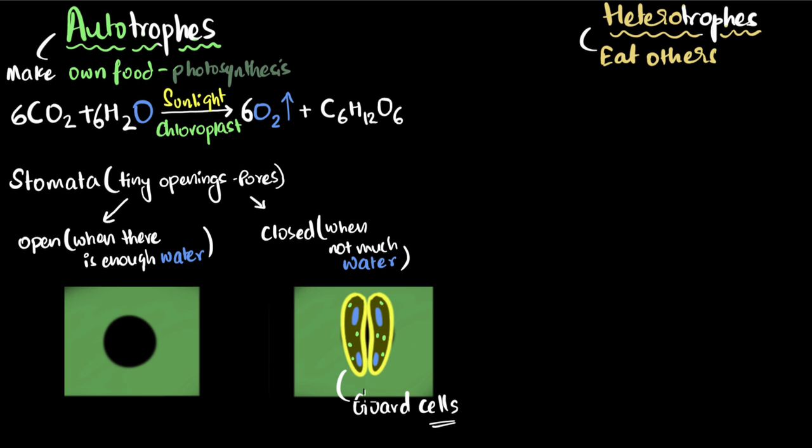So how do you achieve that? Well, you achieve that by having a couple of balloon-shaped cells called guard cells on top of these stomata. Now, when there's not much water, they are shrunk and they pretty much close the opening. But when they photosynthesize, they also have chloroplasts.